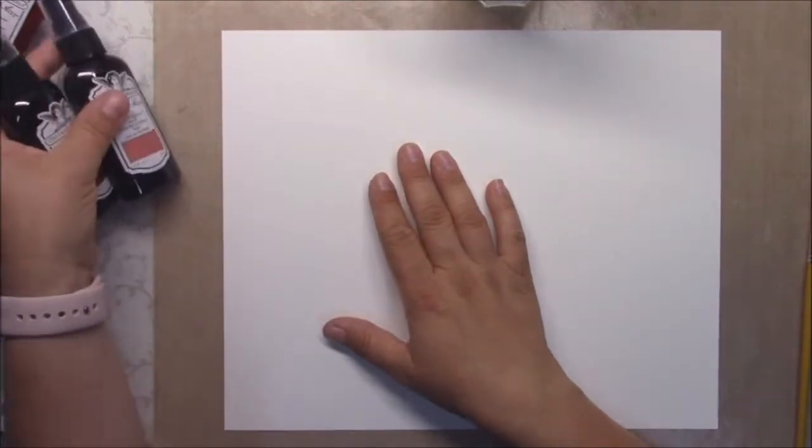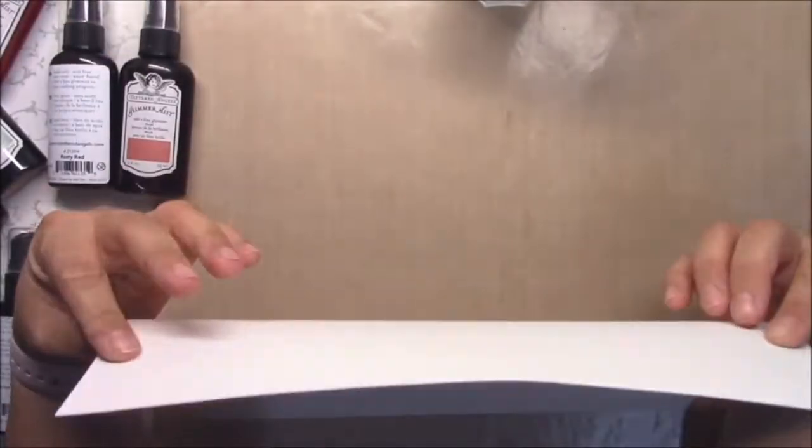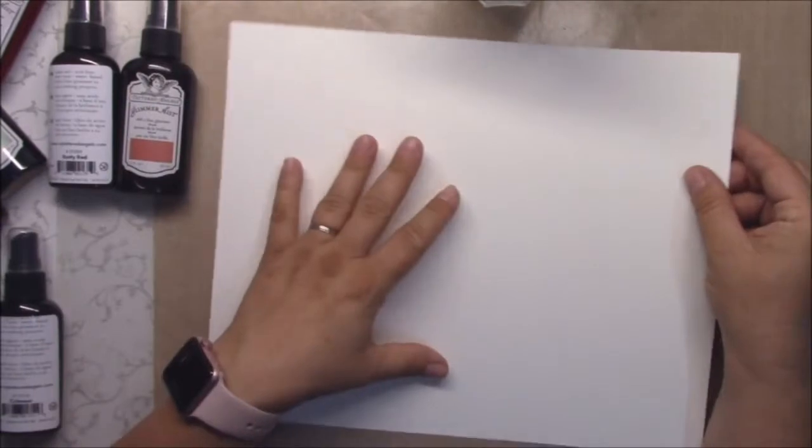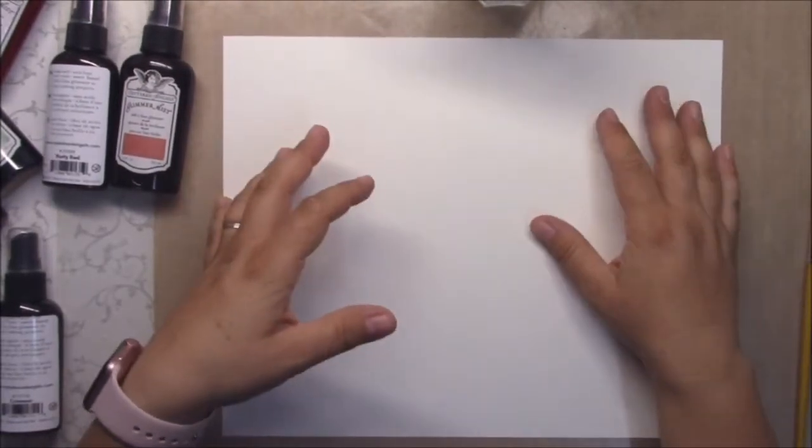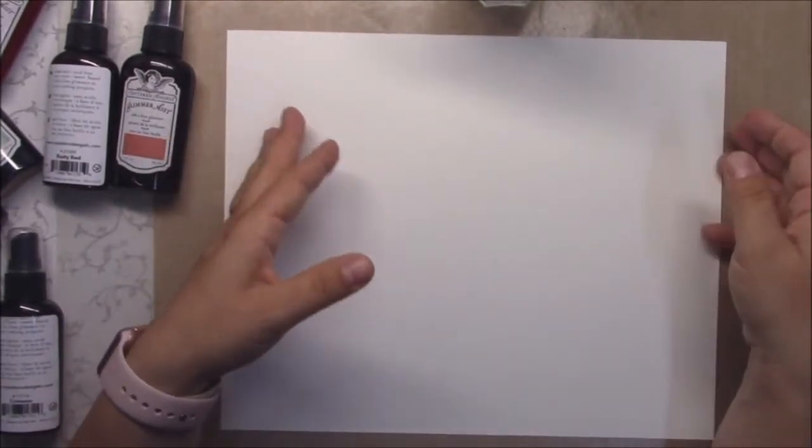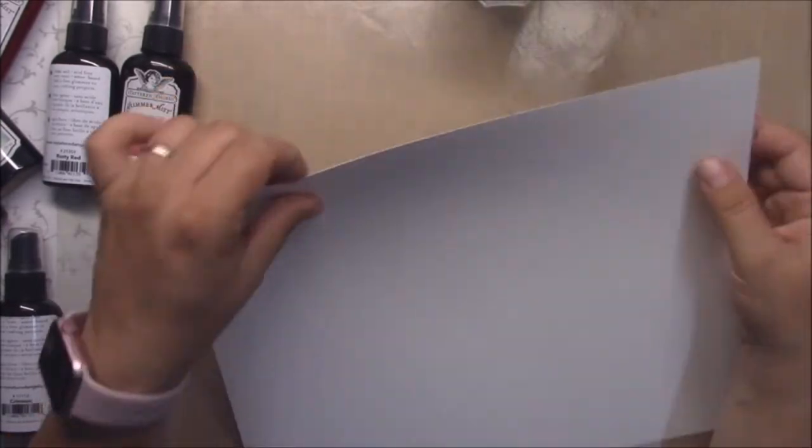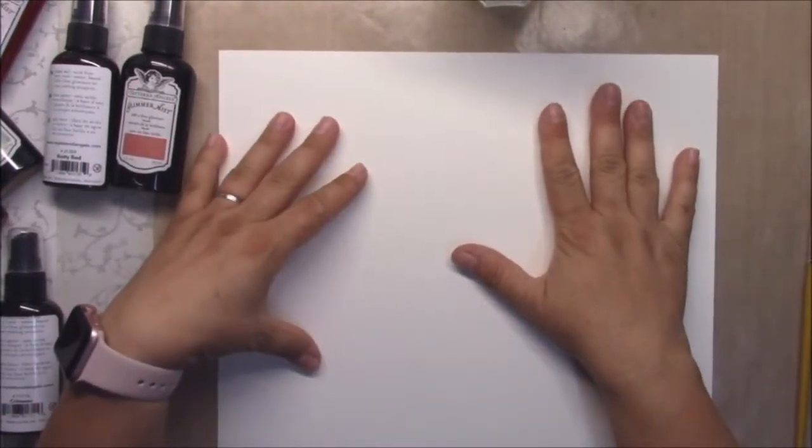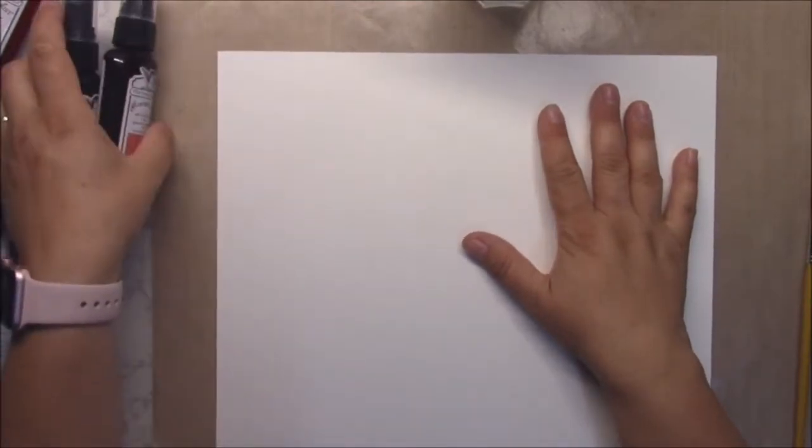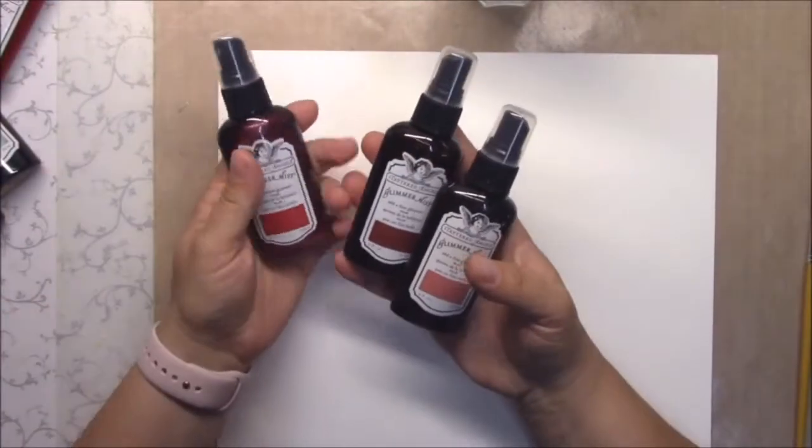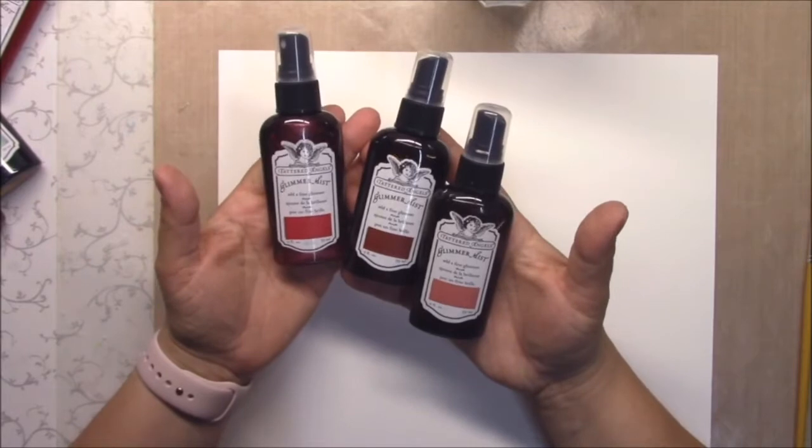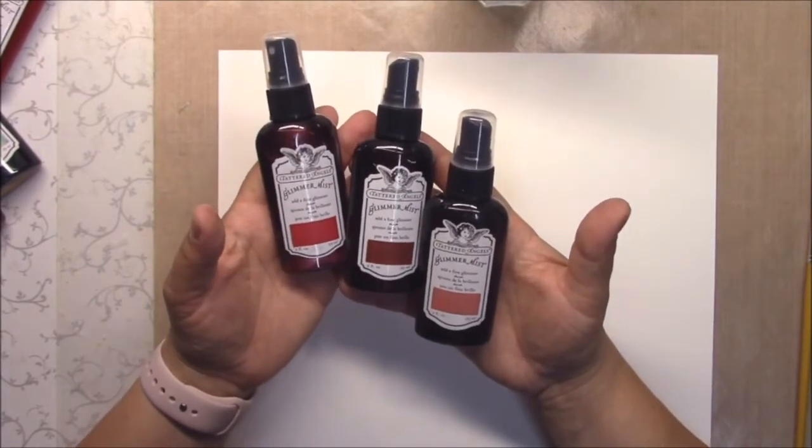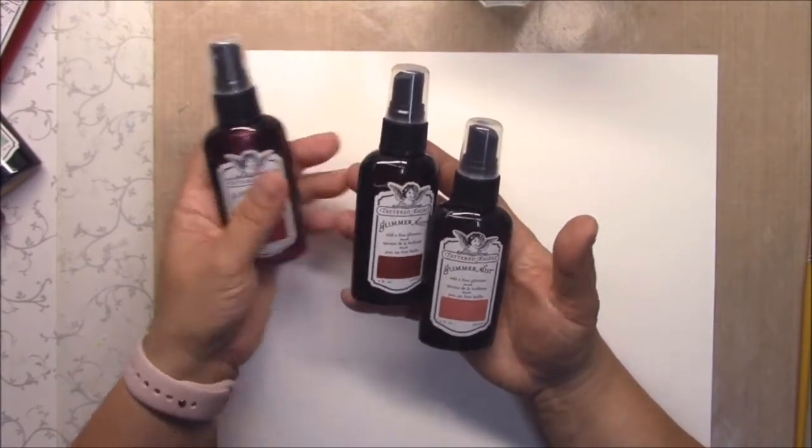So I'm working with just basic cheap watercolor paper. You don't need any specialty paper, just be sure that it's not too thin because you will apply a lot of water on it. You can use any type of spray by Tattered Angels. I'm working here with Glimmer Mist because I have a lot of them.